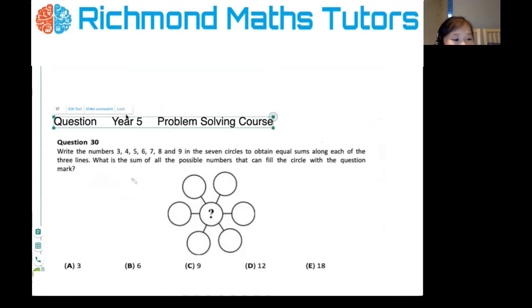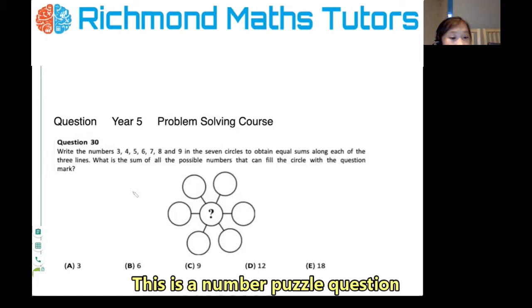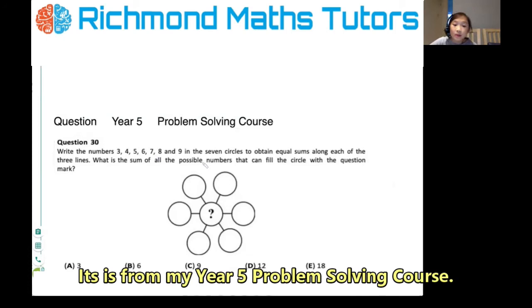Okay, so write the numbers 3, 4, 5, 6, 7, 8, and 9 in the seven circles to obtain equal sums along each of the three lines.